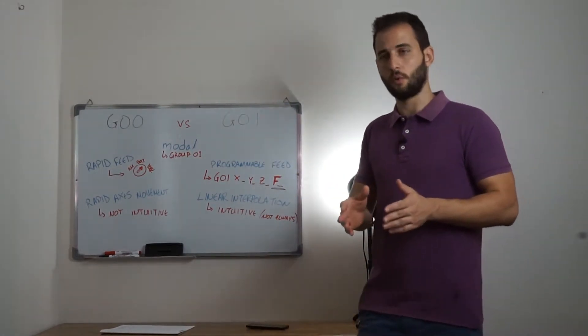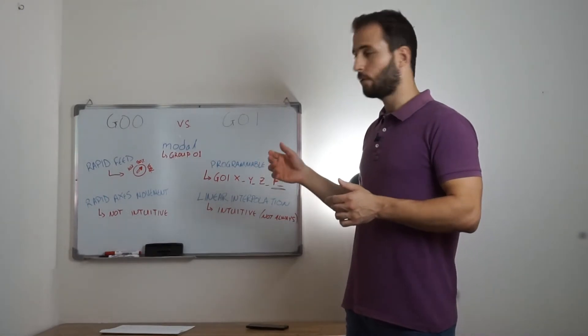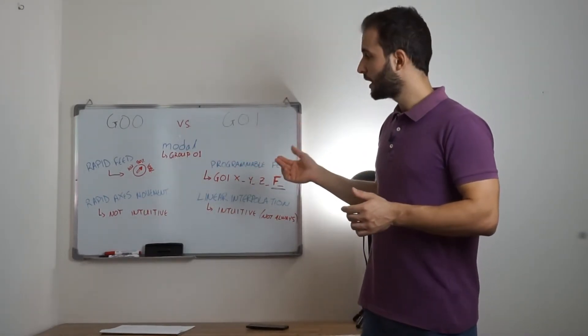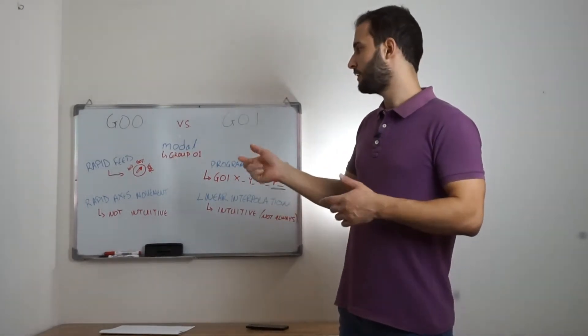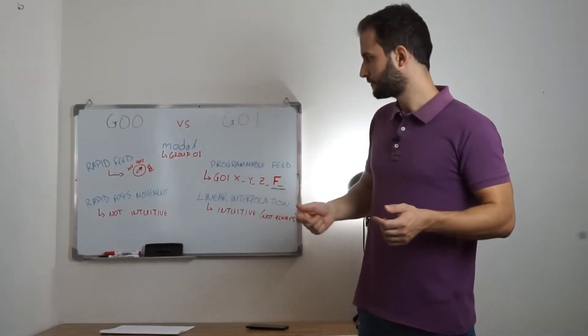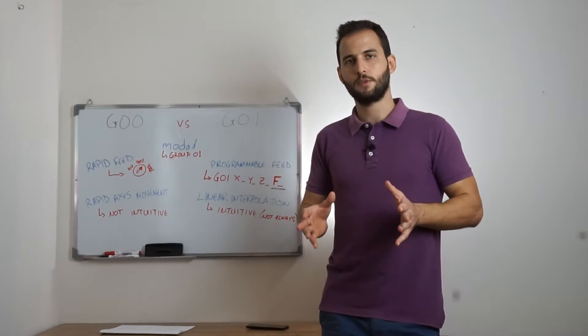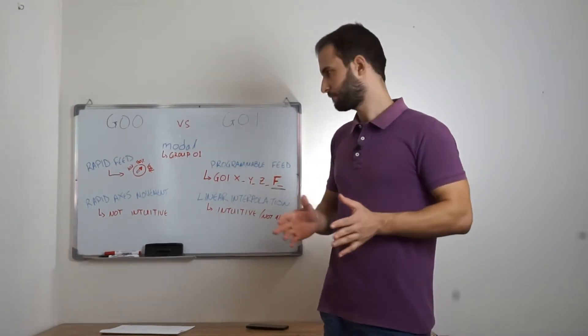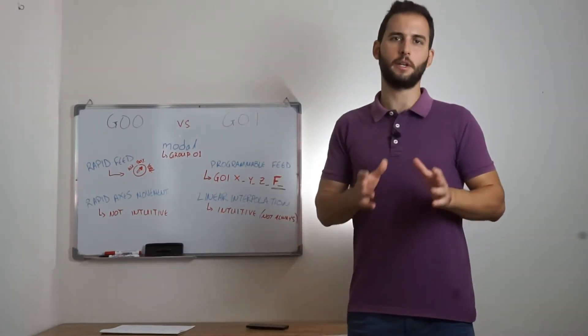The only way to control the feed rate of the axis when we have programmed G0 is by using the relative knob or buttons on the control panel. G0 refers to the rapid movement of the axis and G1 refers to the linear interpolation of the axis.